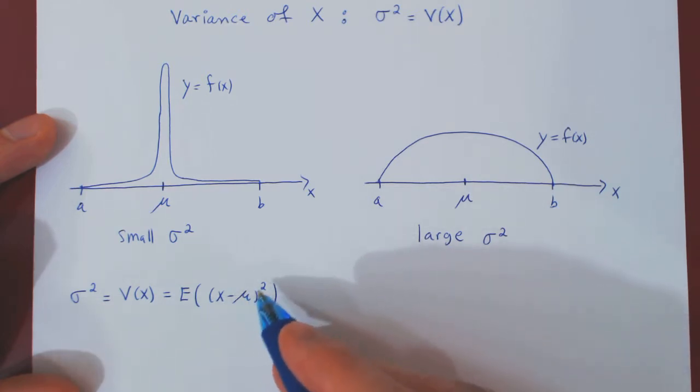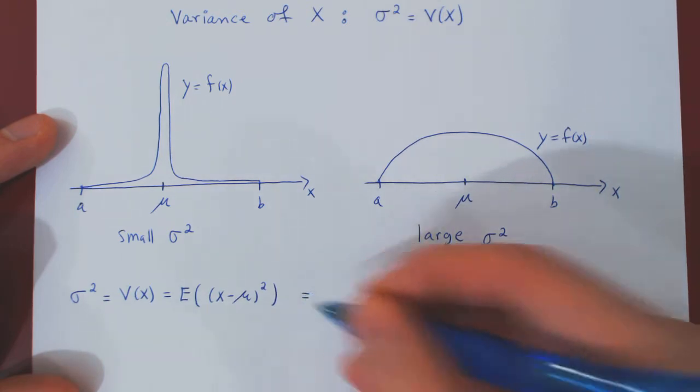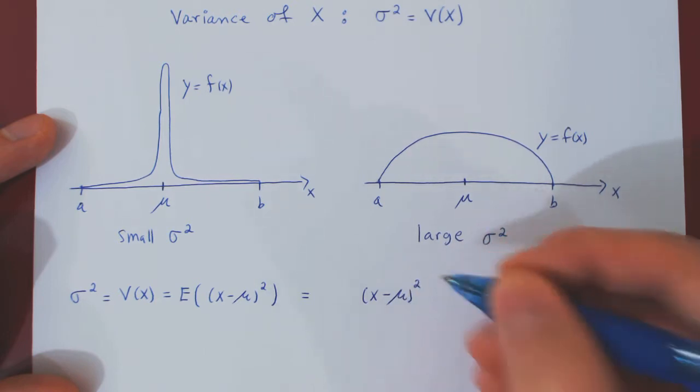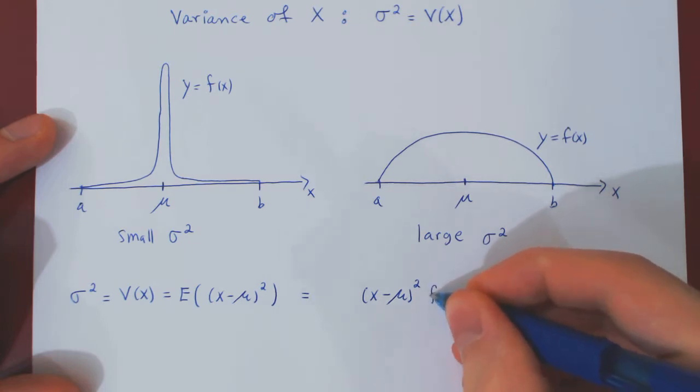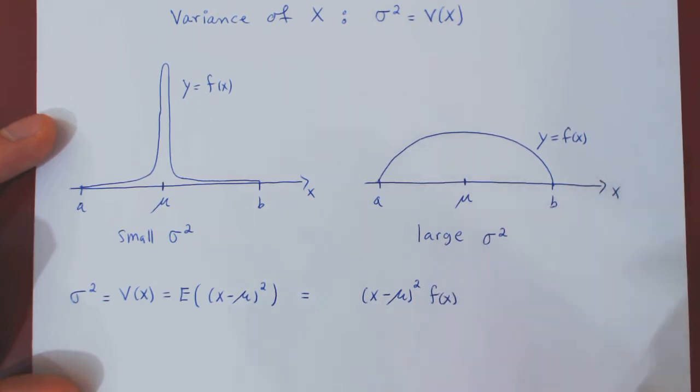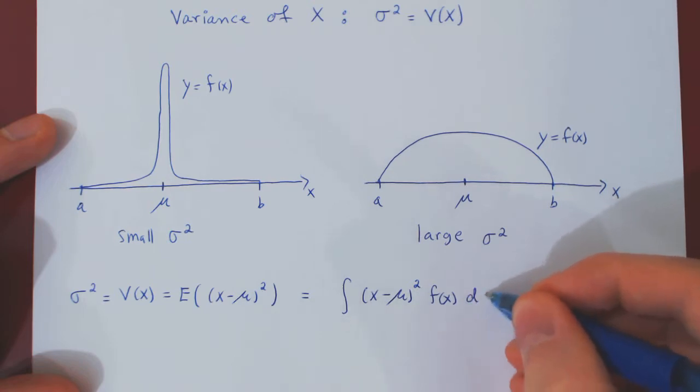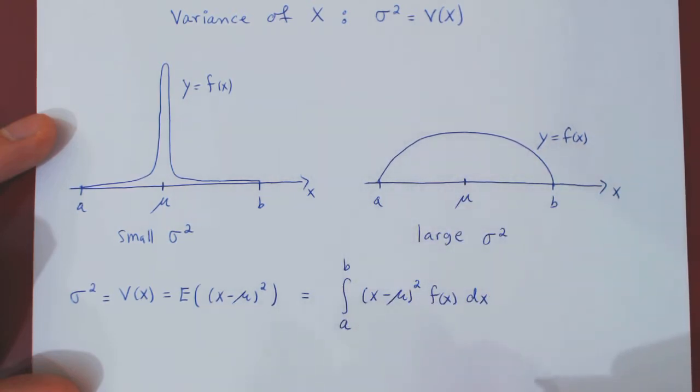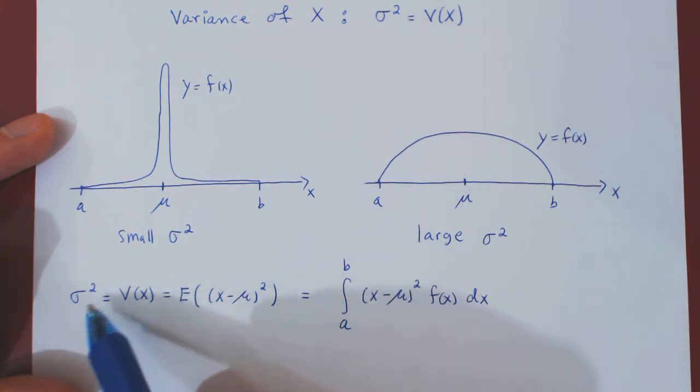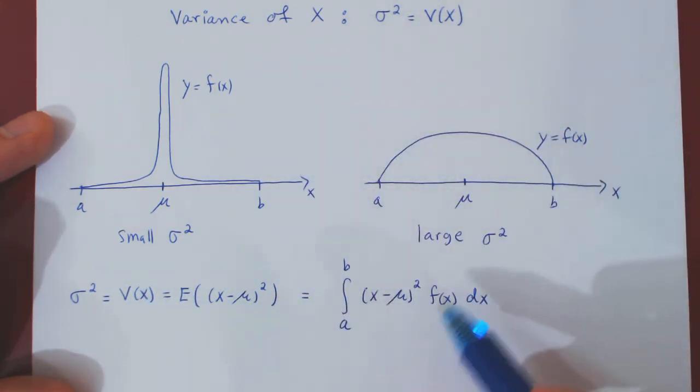And from the previous video, given a random variable, we know how to find its expectation. We have to multiply the expression, so here (X - μ)², by the probability density function, and we have to integrate the whole expression with respect to X over the entire range of X values. And that's it. So, by evaluating first the mean, and then this integral, you will obtain the variance of the random variable X. And finally,